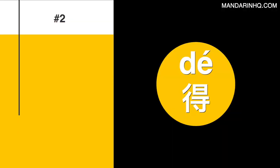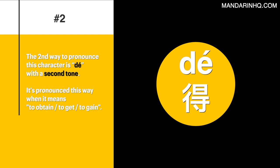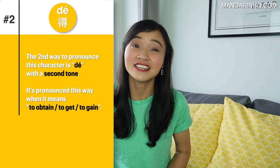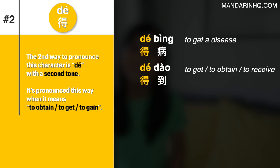Let's move on to the second pronunciation. 得 with a second tone. The second way to pronounce this character is 得. It's pronounced this way when it means to obtain, to get, to gain. Common phrases: 得病 (to get a disease), 得到 (to get, to obtain, to receive).